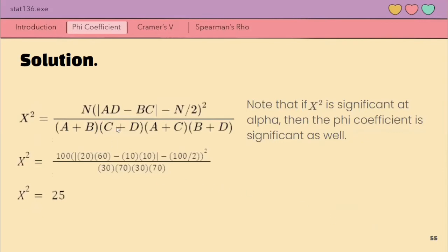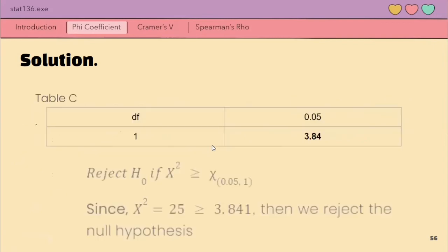Again, we just plug in the values to the formula with correction for continuity and we will arrive at x square equals 25. So, plug in lang natin sya dito.